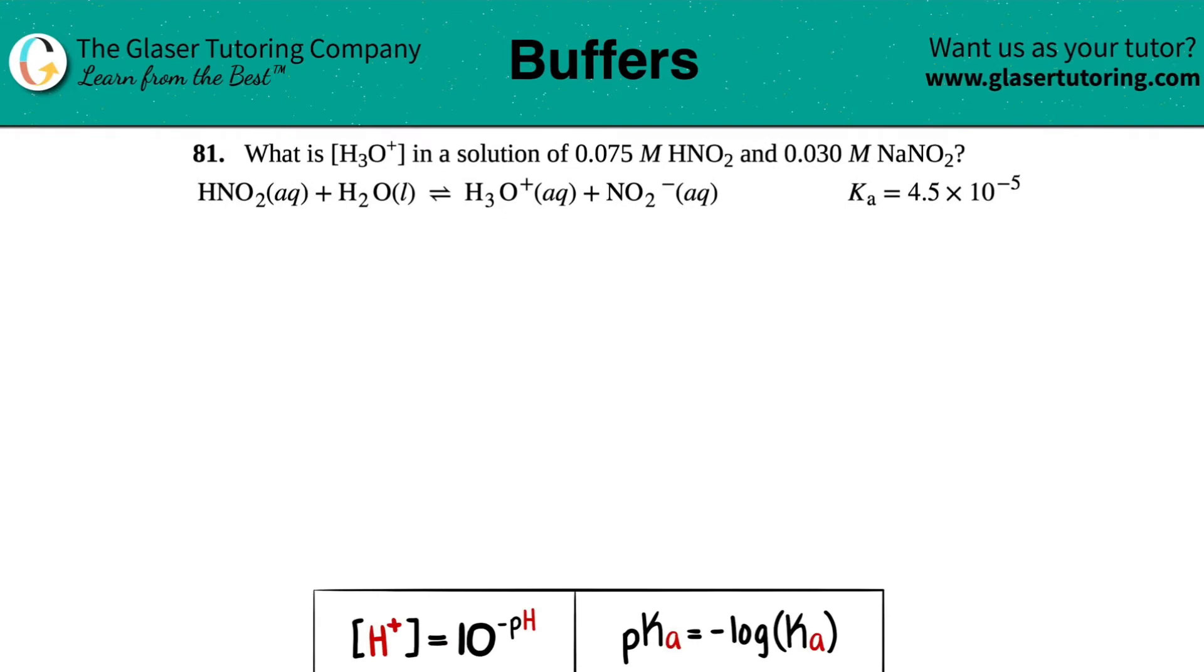Number 81, what is the H3O plus concentration in a solution of 0.075 molar of HNO2 and 0.030 molar of NaNO2? Then they give us a balanced equation with the Ka value.